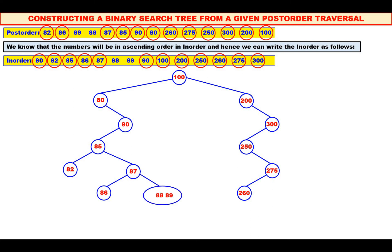Now, among 88 and 89, which is the root? See the post-order — it is 88. Mark 88 and also mark it in the inorder. 89 is to the right of 88. Therefore, 89 should be the right child of 88.